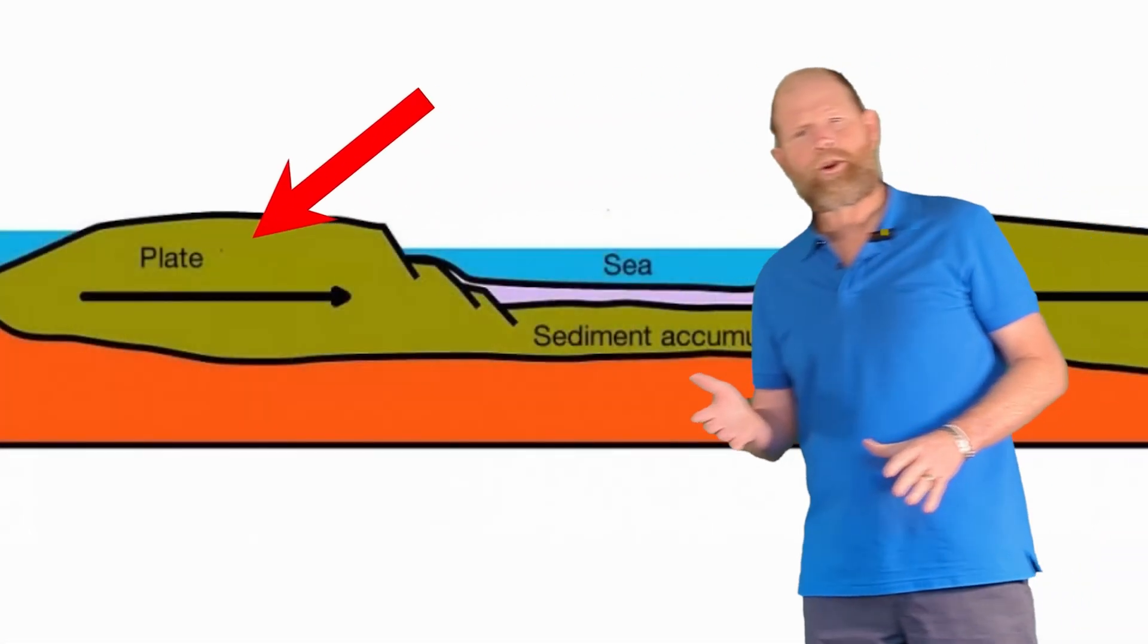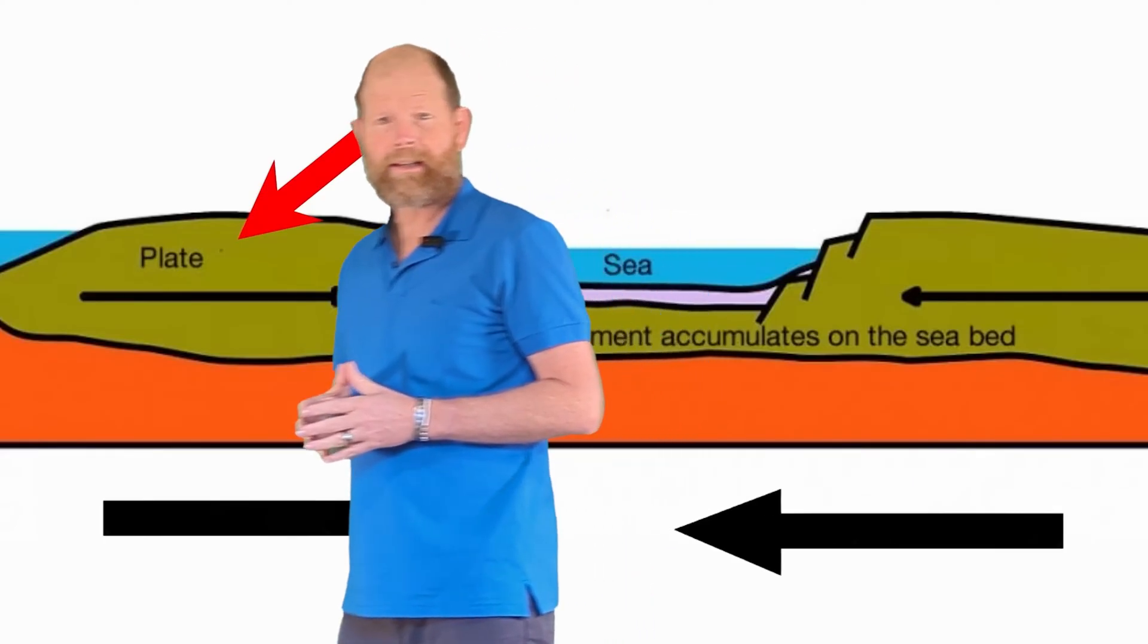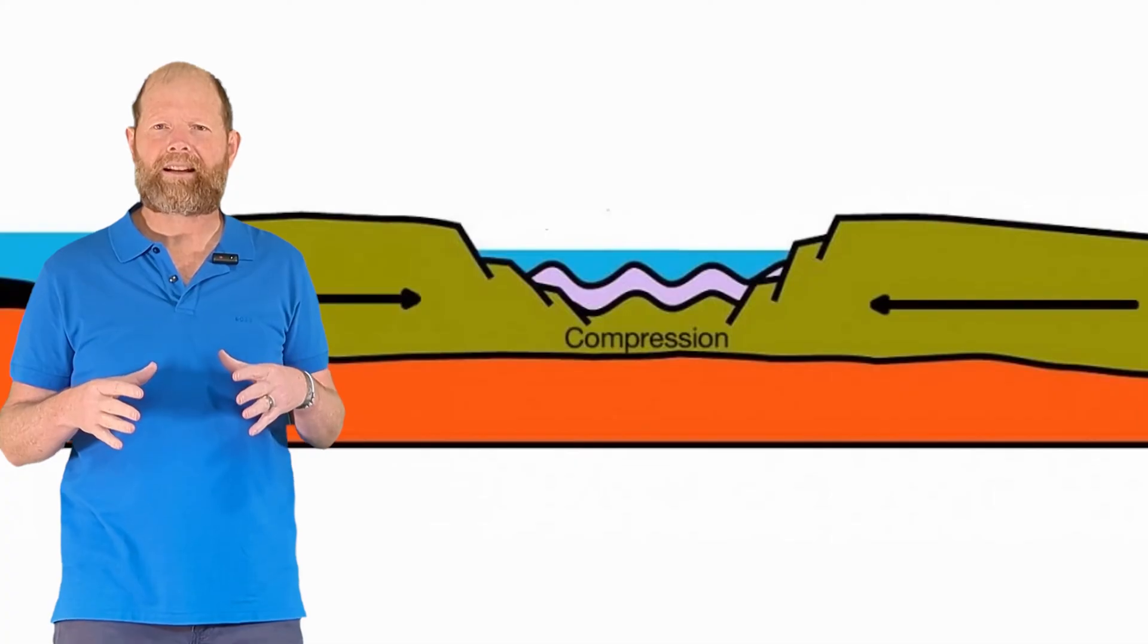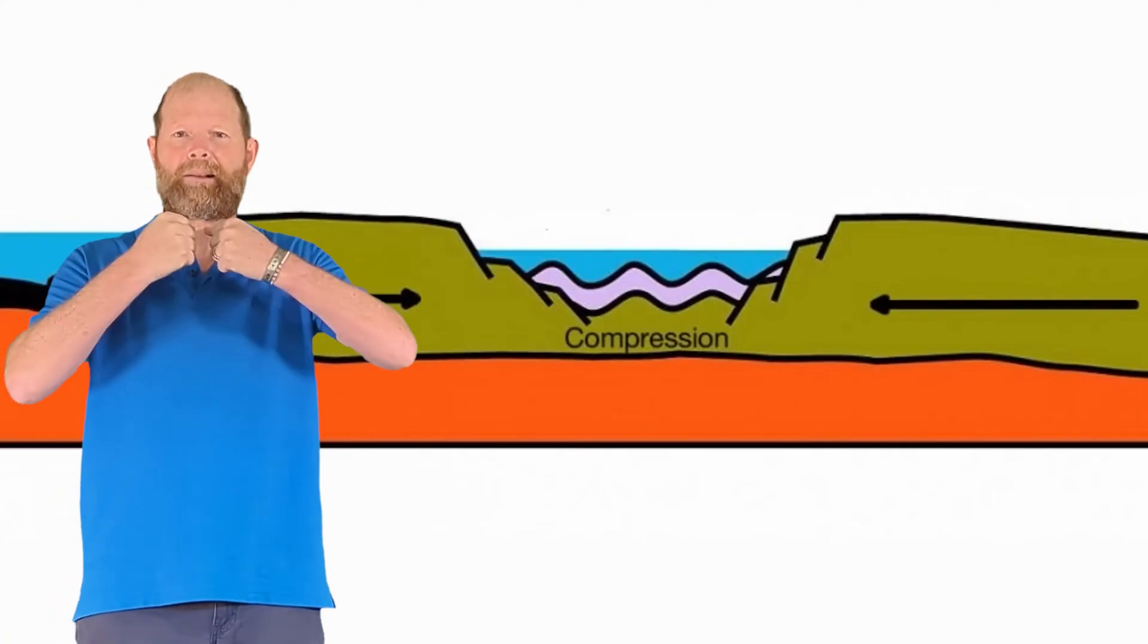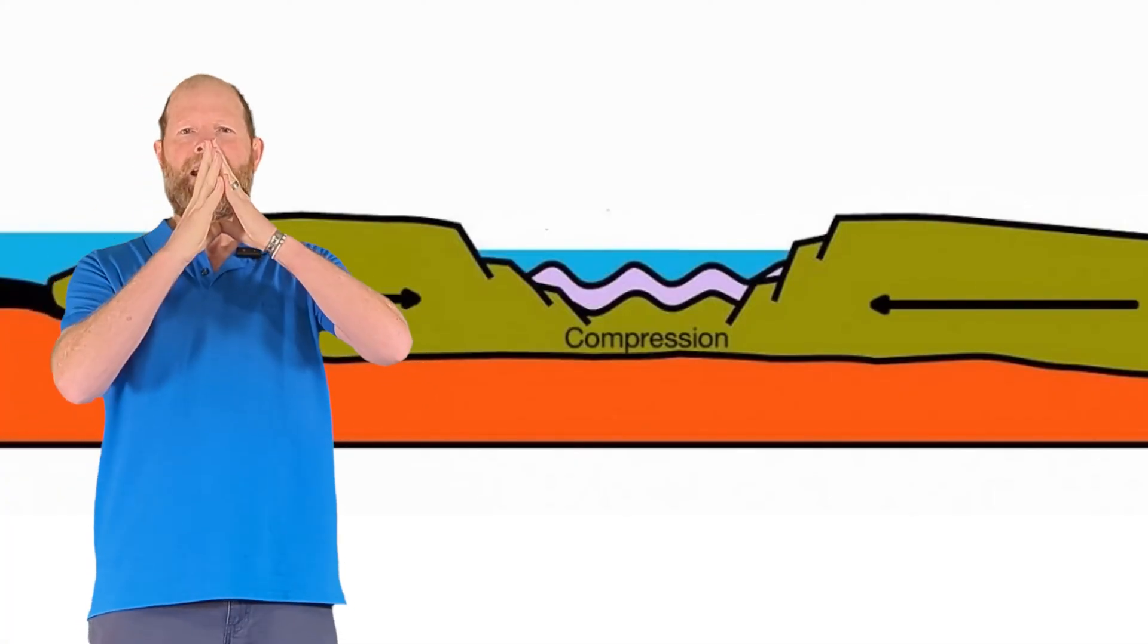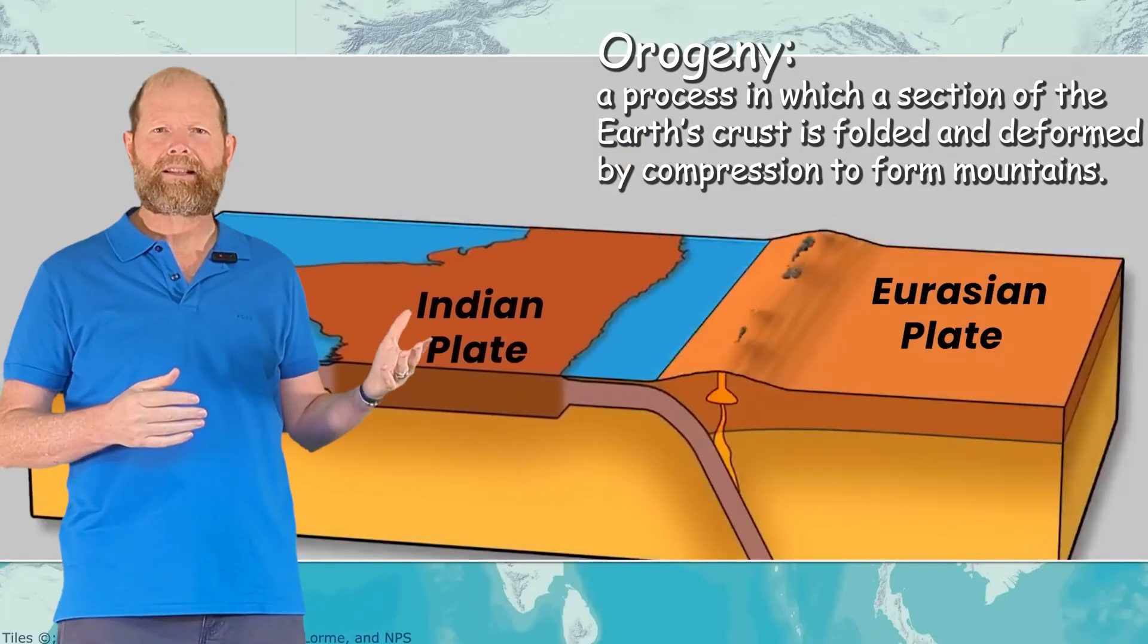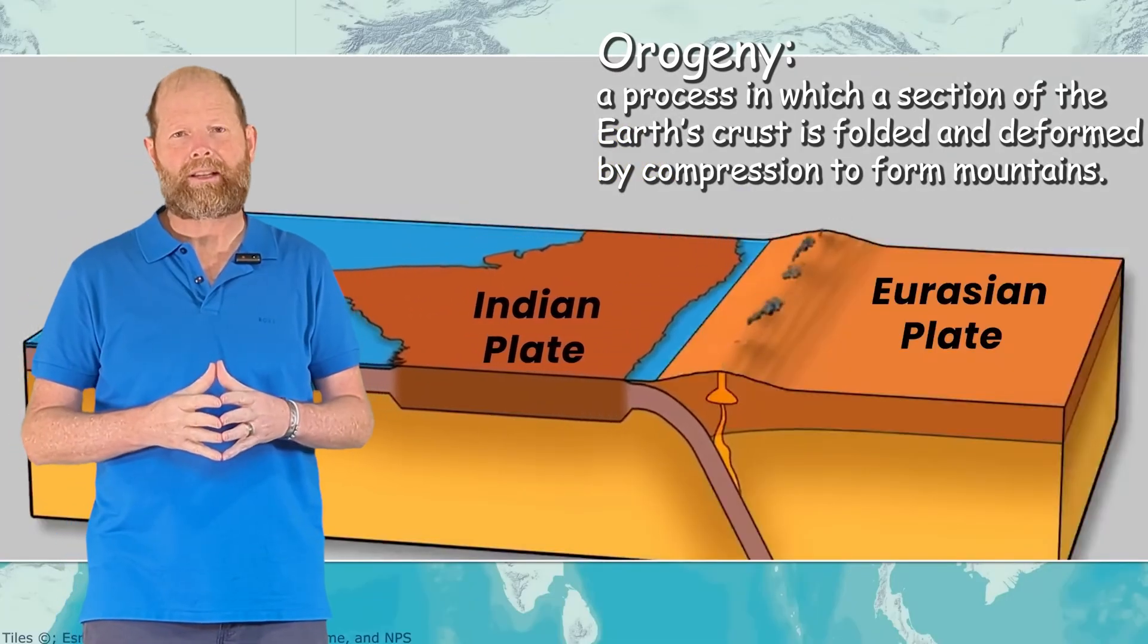The first type is convergent boundaries, where the plates collide head-on. If two continental plates collide, this causes mountains to arise in a process called orogeny, like the Himalayas or the ancient Appalachians.